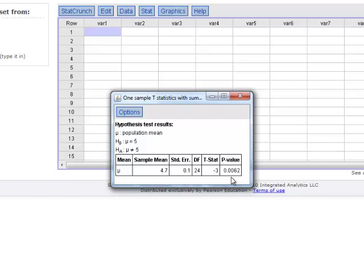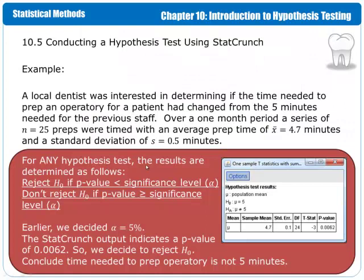The p-value is what we use to determine whether or not we reject the null hypothesis. For any hypothesis test, we reject the null hypothesis if the p-value in the output is less than the significance level that we chose for our test. We do not reject the null hypothesis if the p-value is equal to or greater than the significance level. Here the p-value is 0.0062, and we chose 5% as our significance level. So we reject the null hypothesis because 0.0062 is less than 0.05.